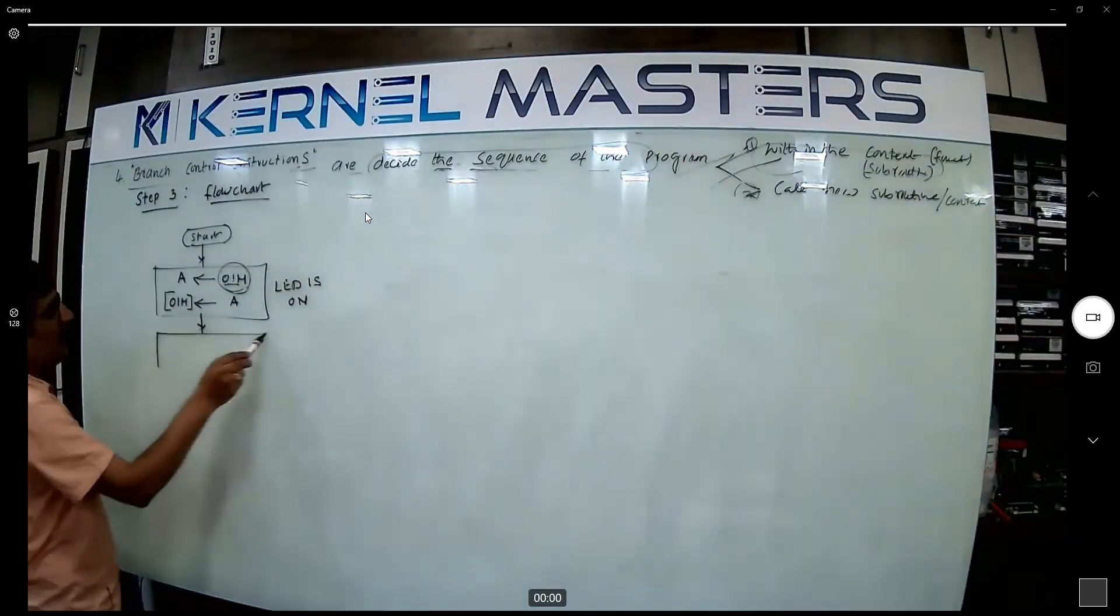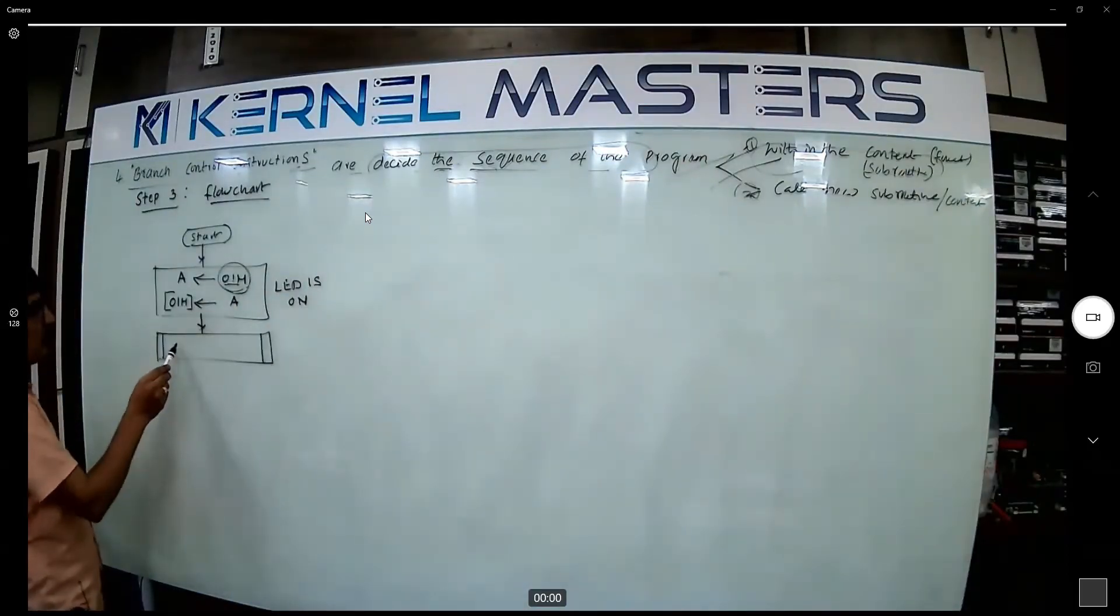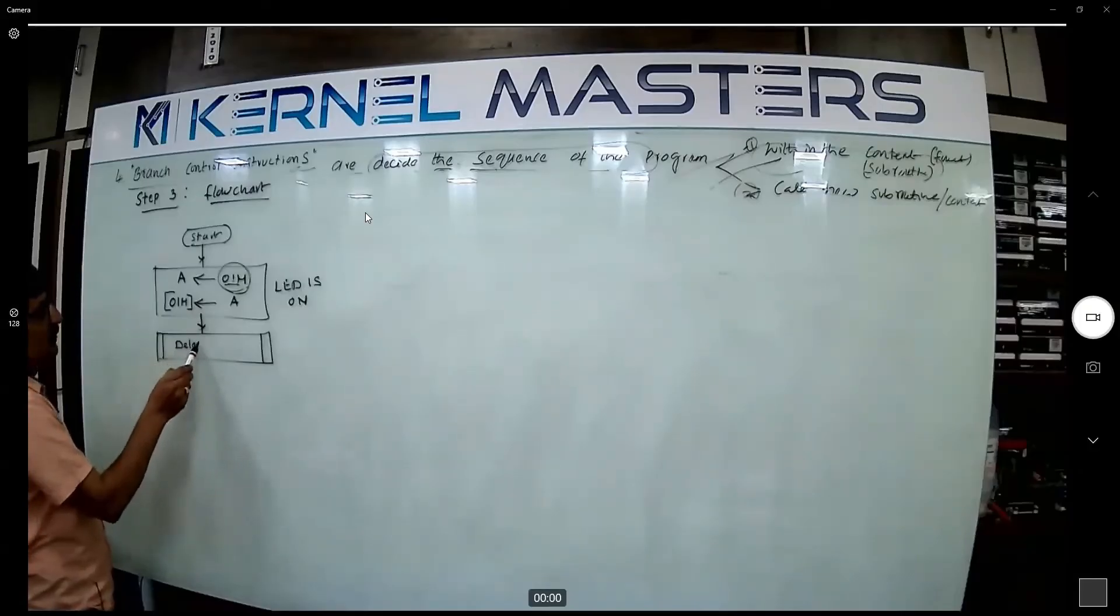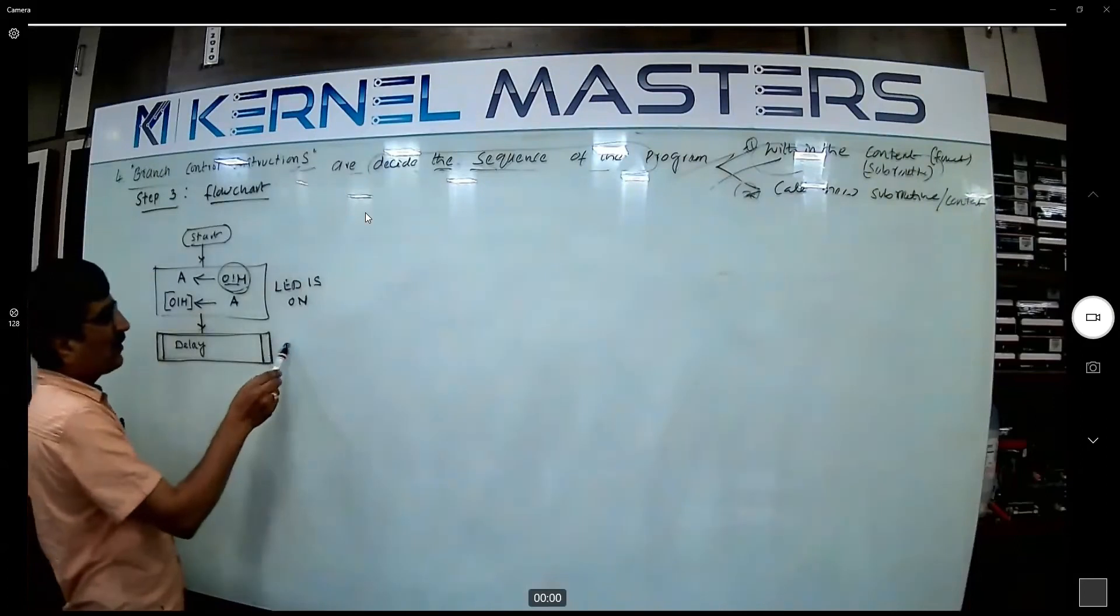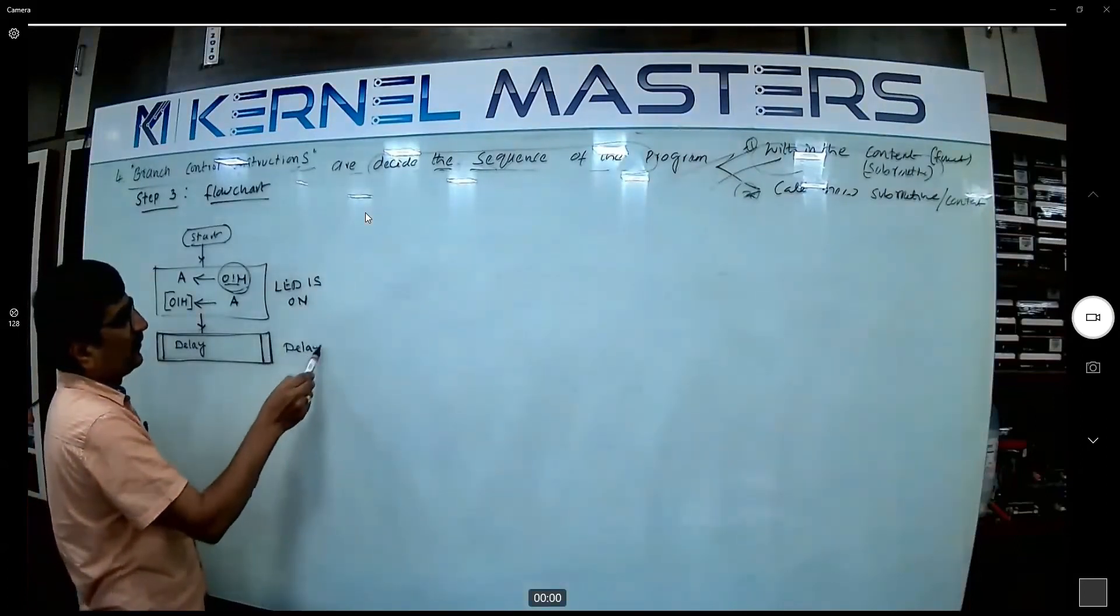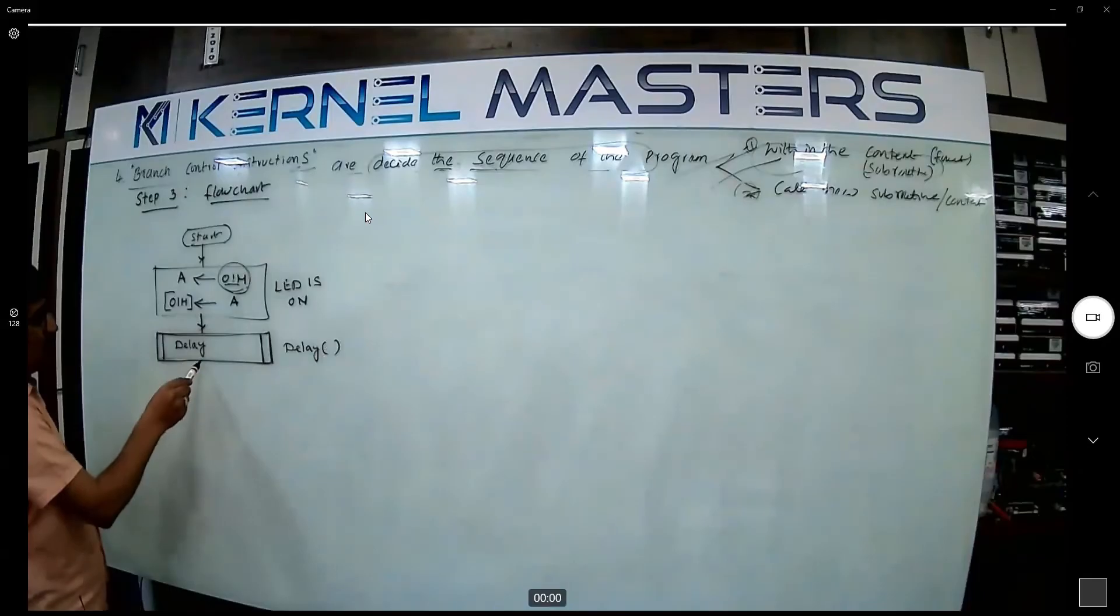Next one, we can call the subroutine. What routine name? Delay subroutine. Mention that double rectangular box to invoke the delay function. You know the function delay? Delay function call.